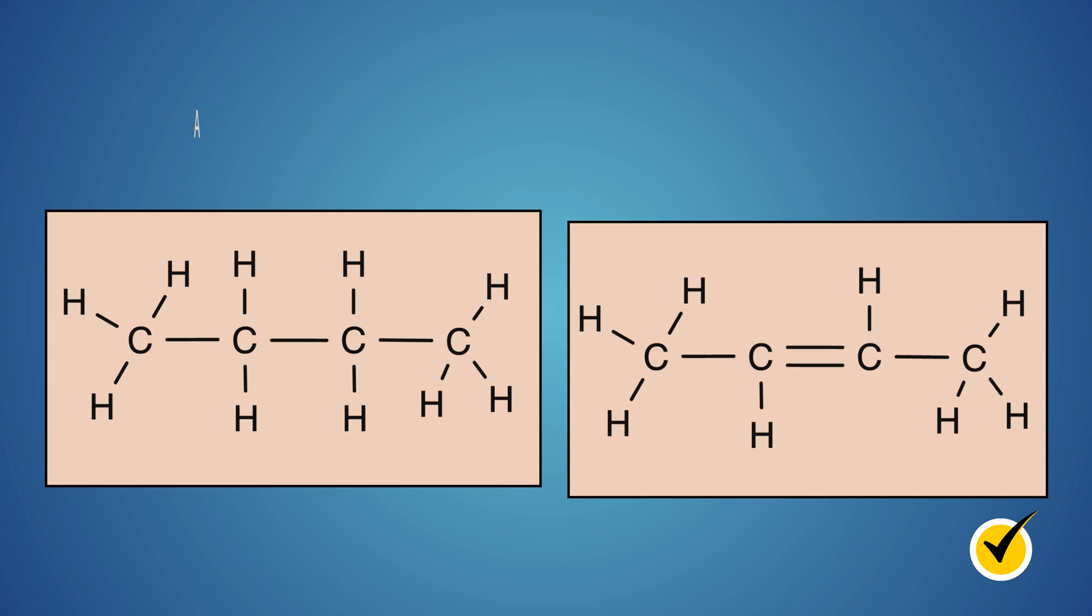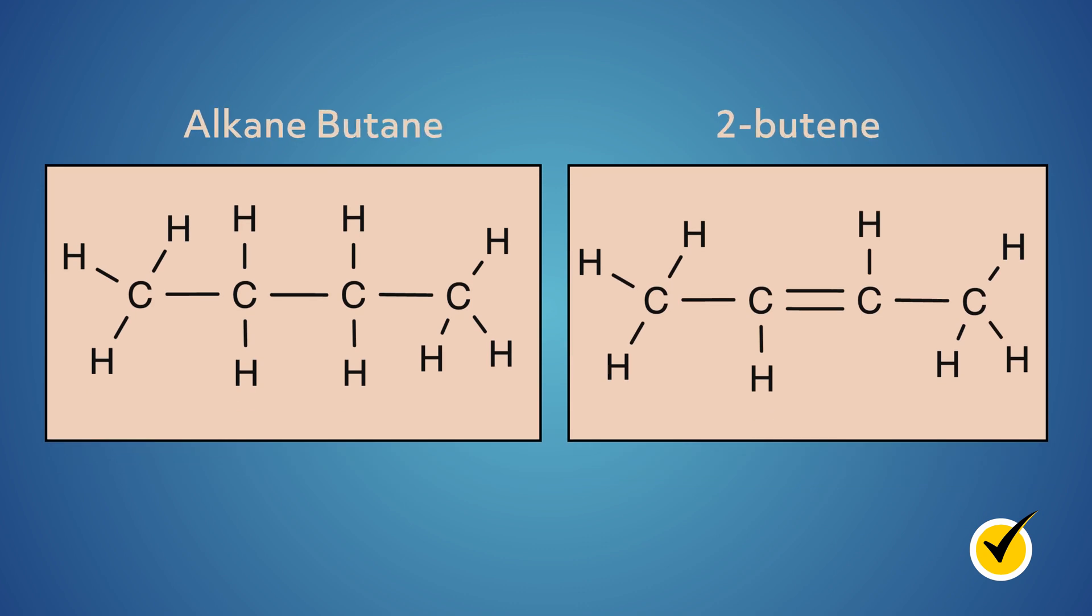Let's look at a simple example, starting with the alkane butane and converting it to the alkene 2-butene. In butane, the 4-carbon frame is saturated with hydrogens. In 2-butene, two of the hydrogens have been replaced by a carbon-carbon pi bond.